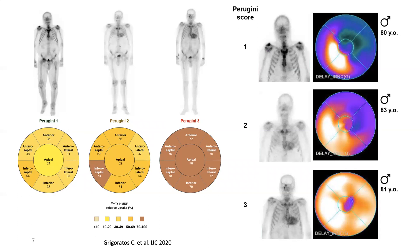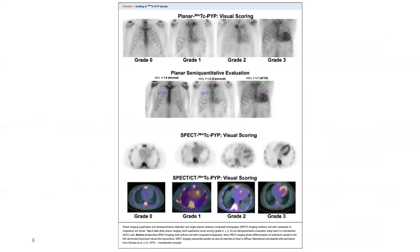Comparing the different SPECT acquisitions across the three Perugini grades, tracer deposition generally starts in the septal wall and the inferior wall, then progresses to the lateral wall in a sort of embracement of the ventricle. The apex is the last wall to be affected. This pattern can also be observed on echocardiography and CMR, and SPECT improves identification of Perugini 1 patients by excluding blood pool as a source of false positives.